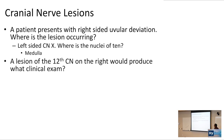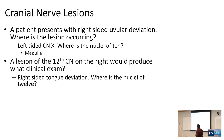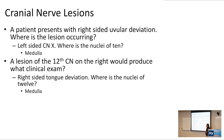A lesion of cranial nerve 12 on the right would produce what clinical exam? Deviation of the tongue to the right — exactly. Right-sided tongue deviation with right-sided cranial nerve number 12 injury. The nuclei of CN 12 is located in the medulla as well.